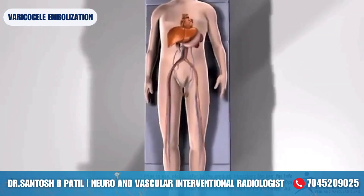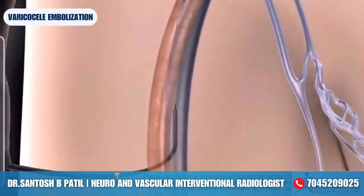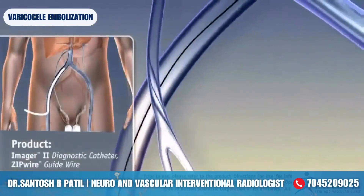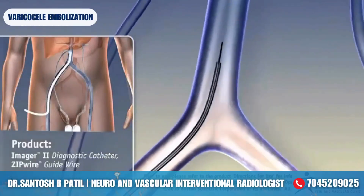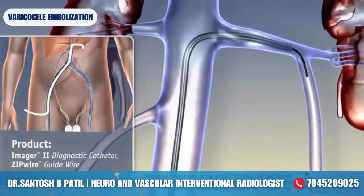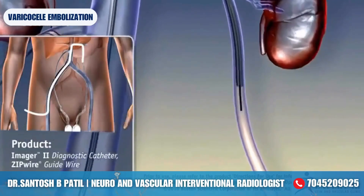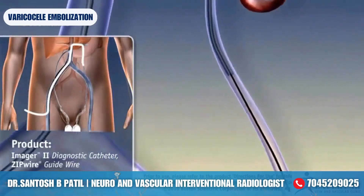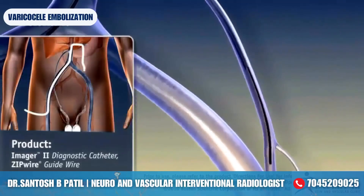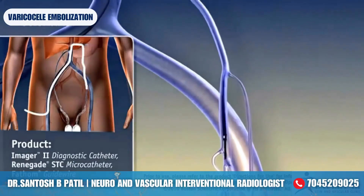Varicocele embolization procedure is performed in a specialized cath lab suite. A small needle is inserted into the main vein at the groin called a common femoral vein. Through this needle, a tiny holoplastic tube called a catheter is guided over a thin delicate wire. The catheter is navigated all the way into the main vein of the testes called the main spermatic vein.